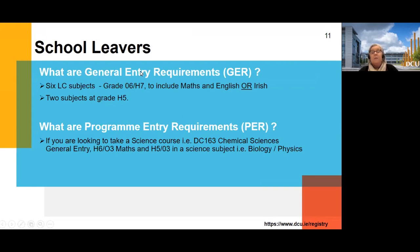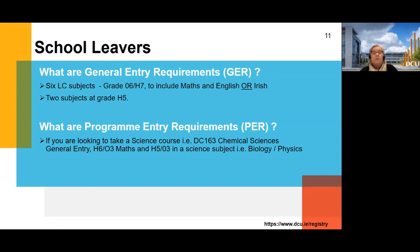For school leavers, there are general entry requirements to get into DCU, and then there are also programme-specific entry requirements. For example, the Bachelor of Education, DC002, requires five H5s and a minimum H4 in Irish. Science programmes require a science subject like chemistry or biology. If you don't meet those requirements, even with 600 points, the system won't process your application because you're missing the general or programme entry requirements.